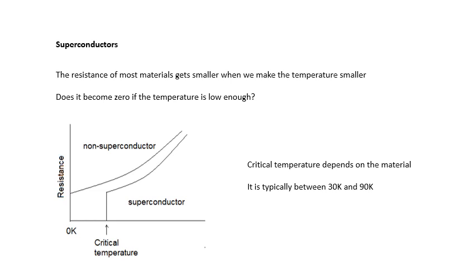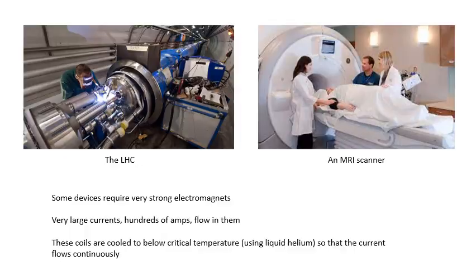All kinds of weird quantum things happen inside the metal, which we don't need to know about. But basically, the charge carriers can pass through it unimpeded. There's no resistance. Now, depending on the material, we're talking about 30 Kelvin, 90 Kelvin, about minus 200 degrees centigrade around there for certain materials. They superconduct.